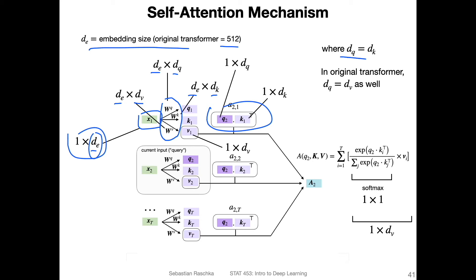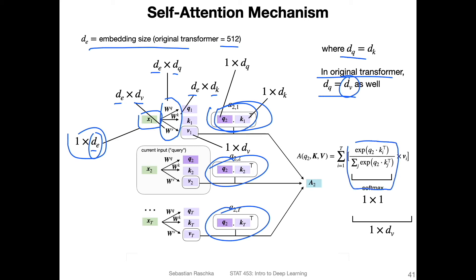The dot products between query and key vectors are scalars. The softmax gives us the scaled attention weights, which we then multiply by the value vector of dimension dv. Summing these up gives an output of size 1 × dv for each word.